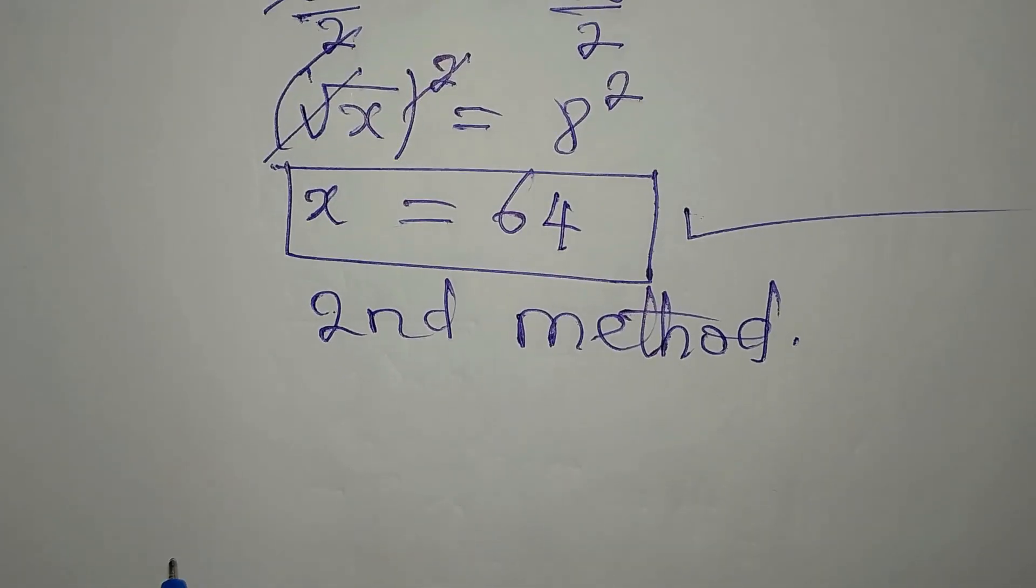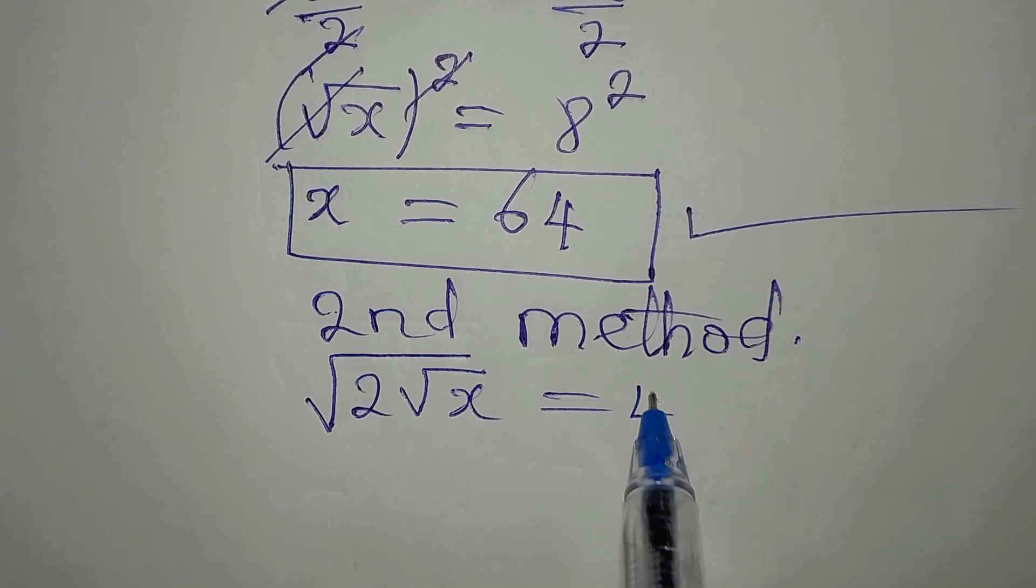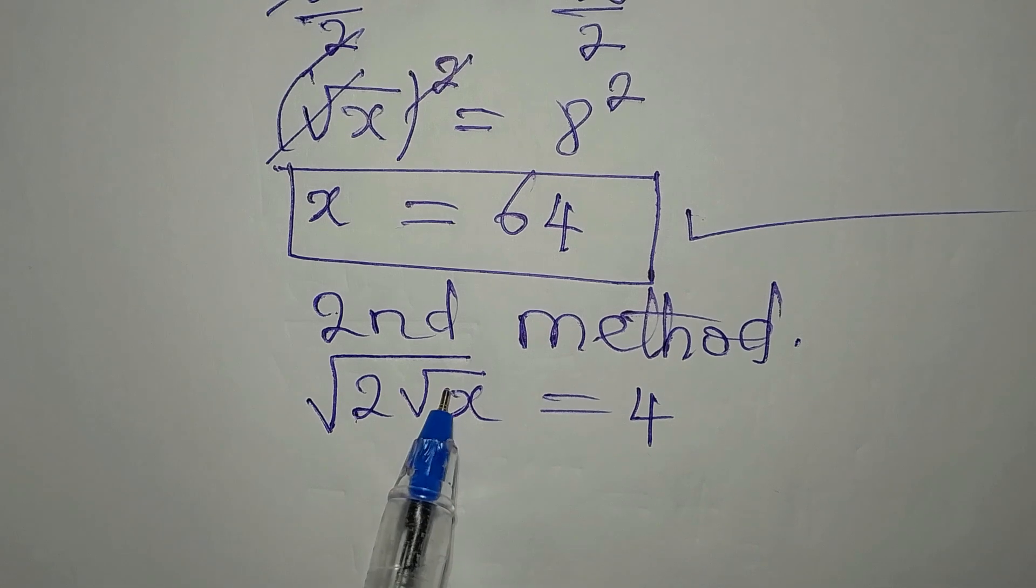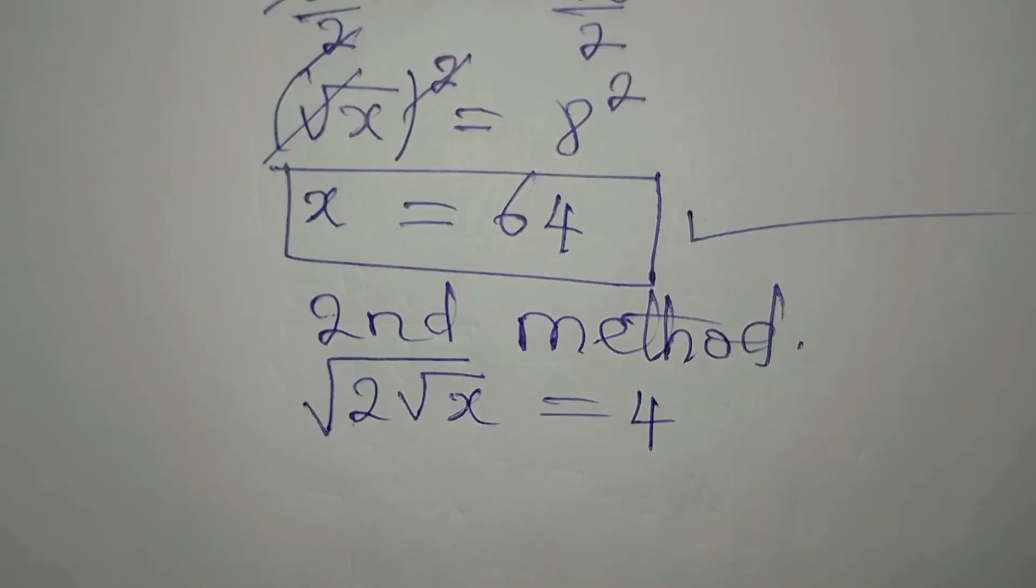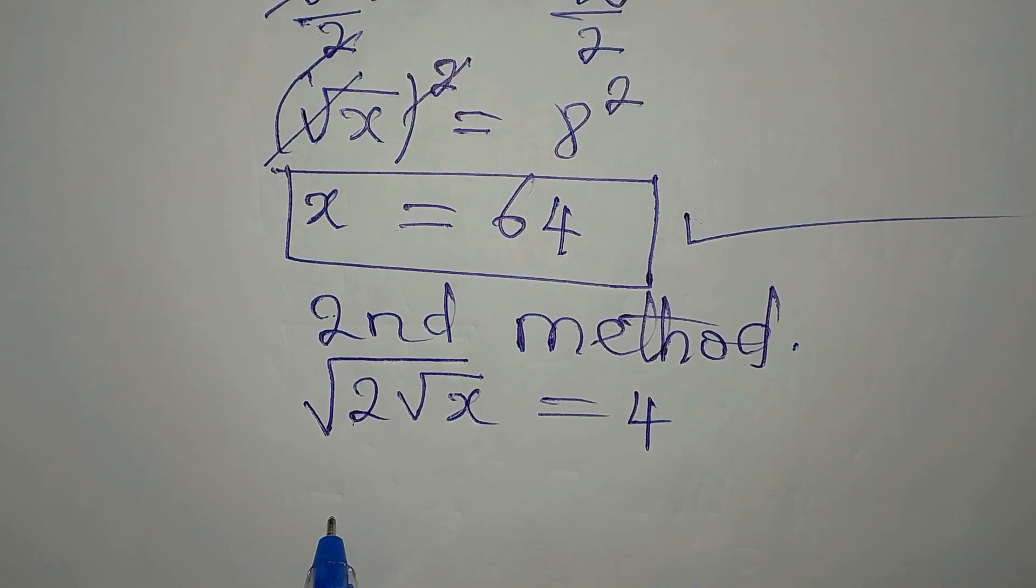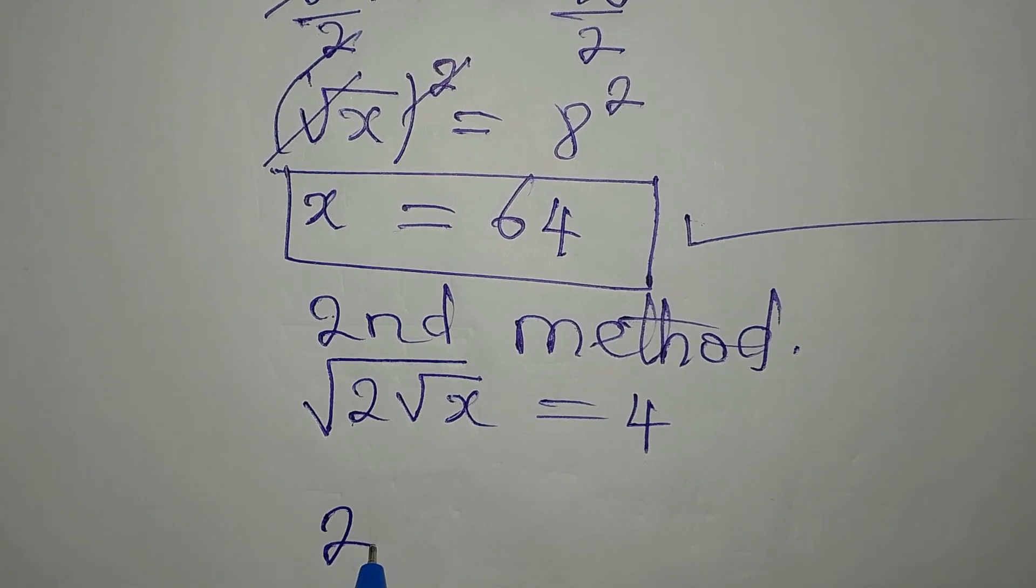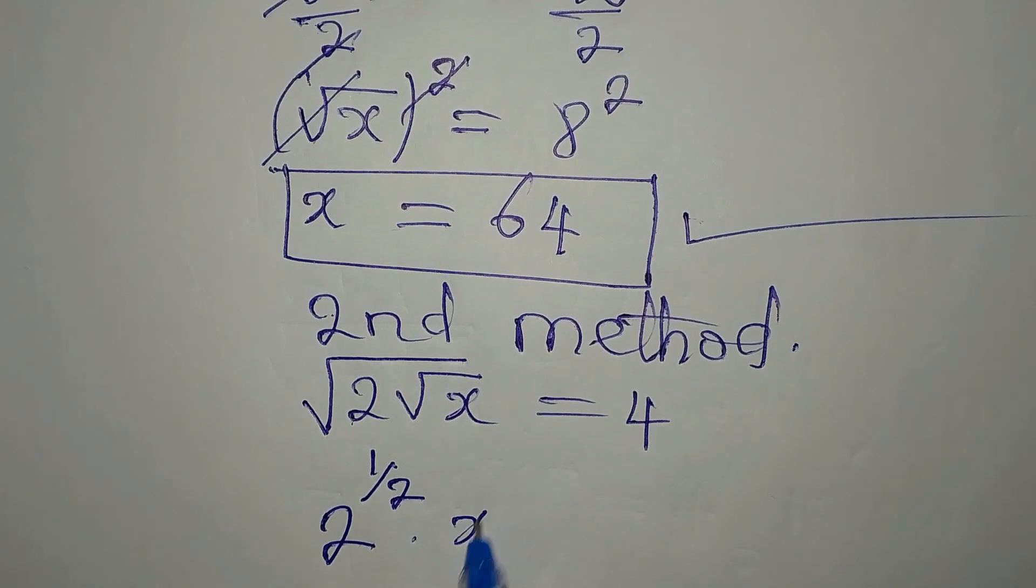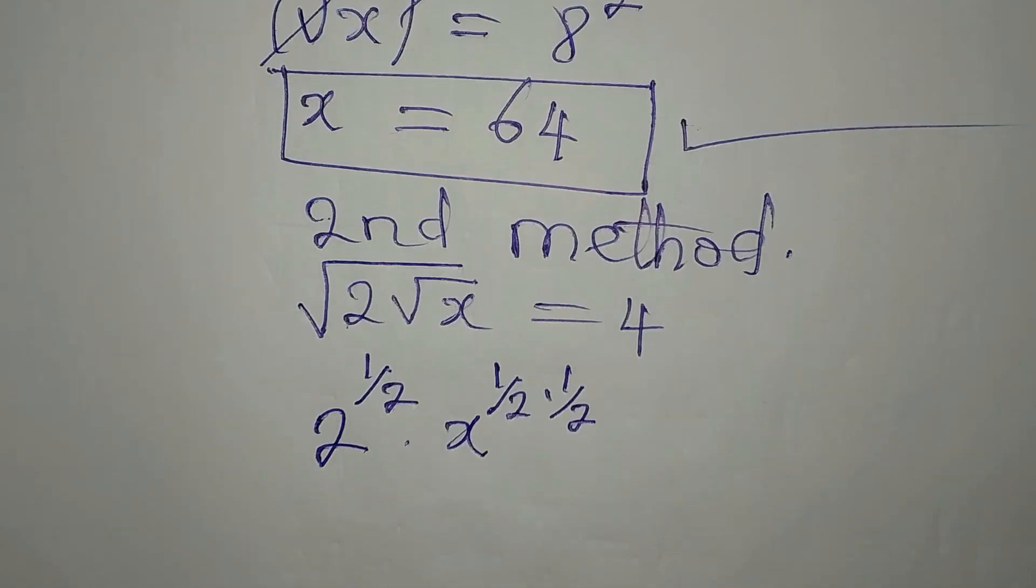And for the second method, remember that the equation is still 2 root x equals 4. 2 here is under 1 square root sign. And then this right here is under 2 square root signs. As a matter of fact, we can just separate what we have here and get something like this. We have 2 to the power of 1 over 2 because it's under 1 square root sign. Multiply by x to the power of 1 over 2 times 1 over 2 because x is under 2 square root signs. This equals 4.